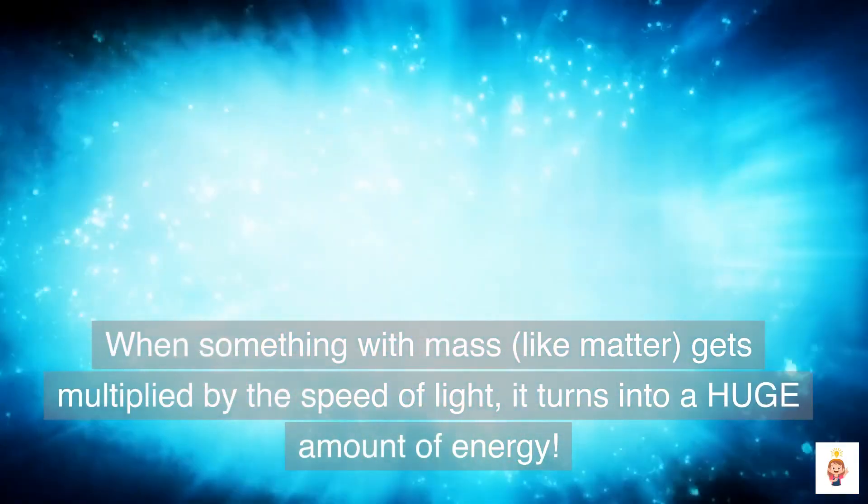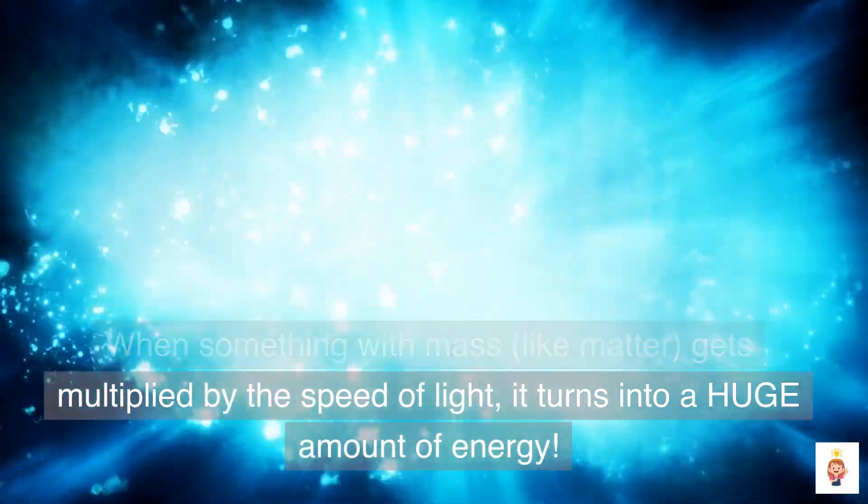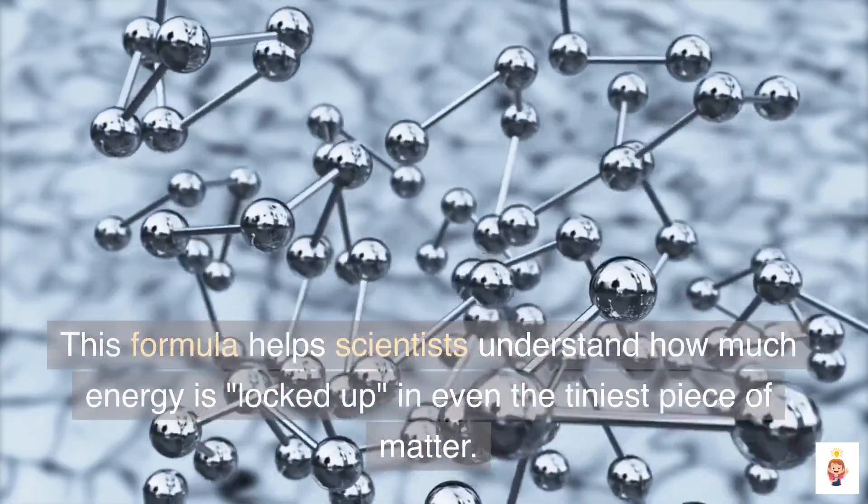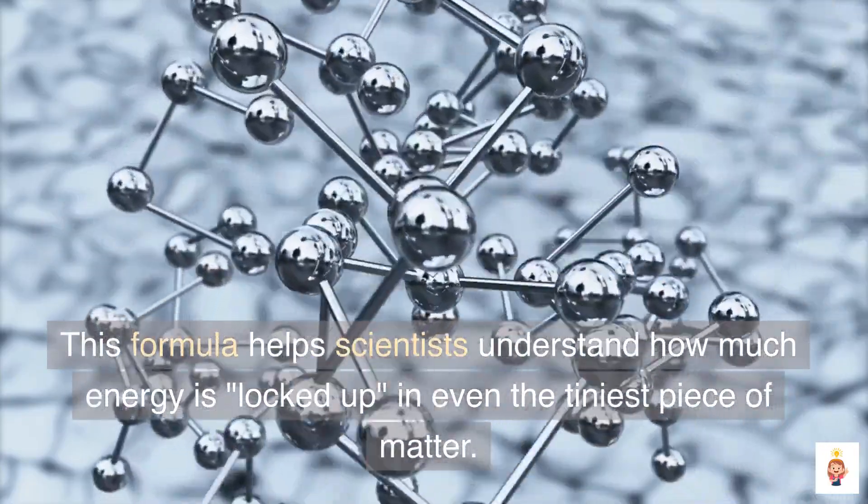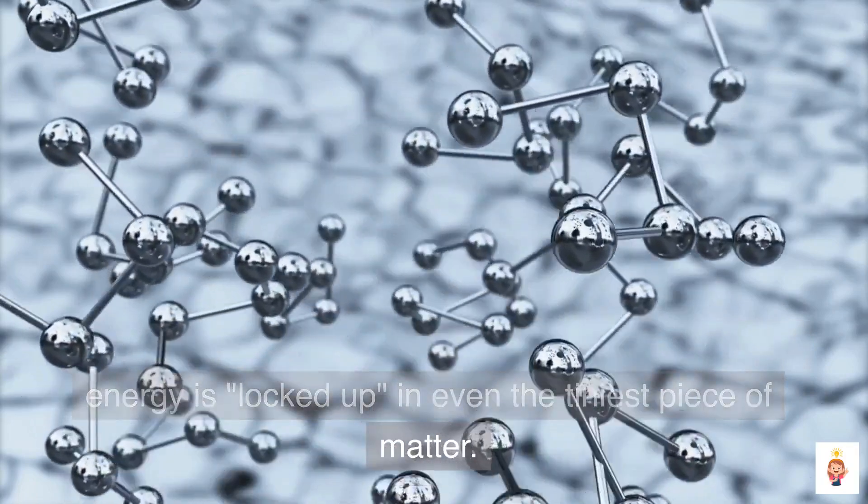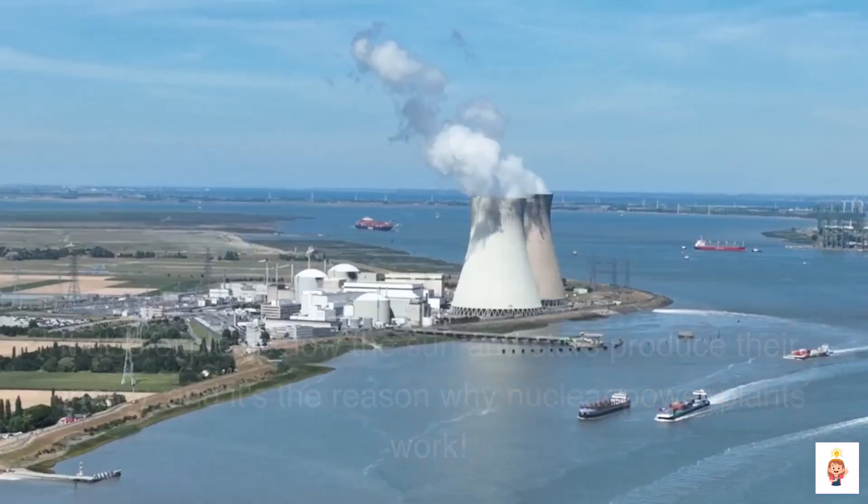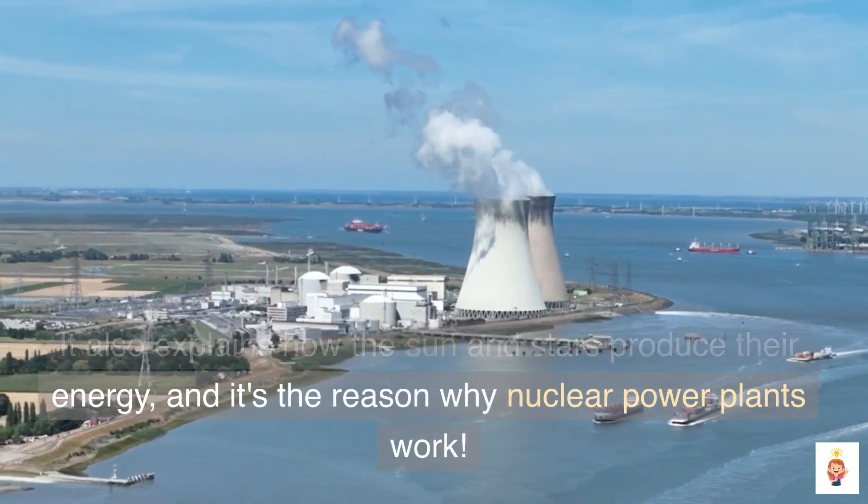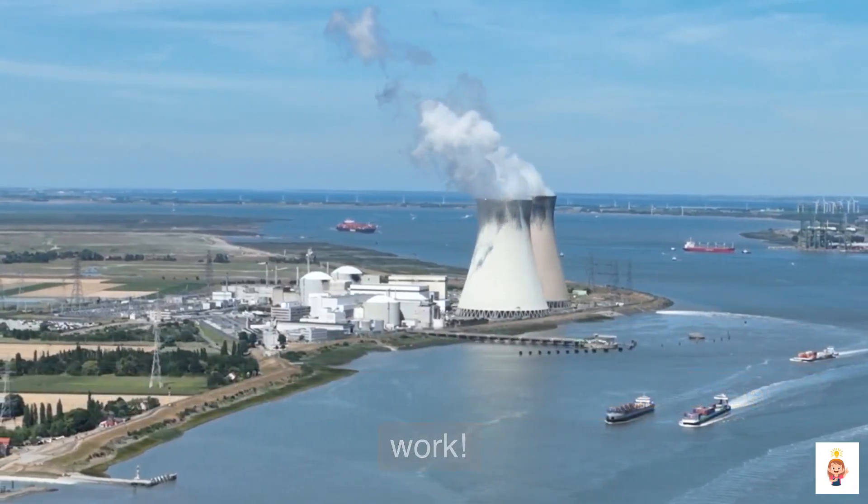When something with mass, like matter, gets multiplied by the speed of light, it turns into a huge amount of energy. This formula helps scientists understand how much energy is locked up in even the tiniest piece of matter. It also explains how the sun and stars produce their energy, and it's the reason why nuclear power plants work.